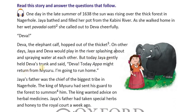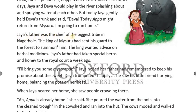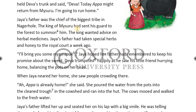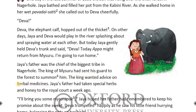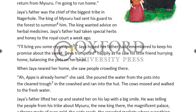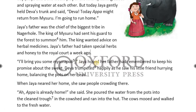But today, Jaya gently held Deva's trunk and said, 'Deva, today Appa might return from Mysuru. I am going to run home.' Jaya's father was the chief of the biggest tribe in Nagarhol. The king of Mysuru had sent his guard to the forest to summon him — 'summon' means to officially call someone to be present. The king wanted advice on herbal medicines — 'herbal' means something Ayurvedic. Jaya's father had taken special herbs and honey to the royal court a week ago. 'I will bring you some Mysore pak' — Mysore pak is a South Indian sweet. Jaya hoped her father had remembered to keep his promise about the sweet.